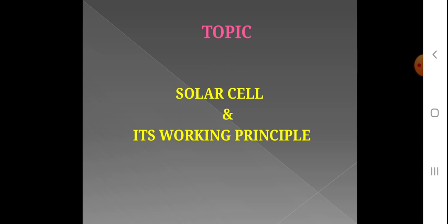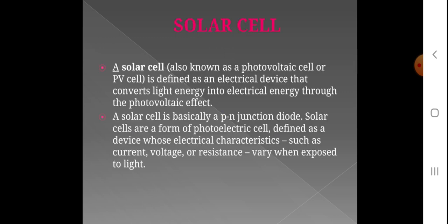We will cover the Solar Cell definition and then its working principle. Solar Cell is also known as Photovoltaic Cell or PV Cell. Photovoltaic means photo is light and voltaic is voltage — so it is a device that converts light energy into electrical energy. Solar Cell is defined as an electrical device that converts light energy into electrical energy through the photovoltaic effect.